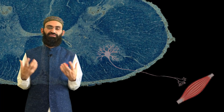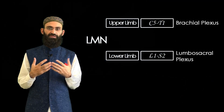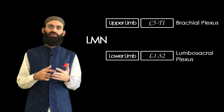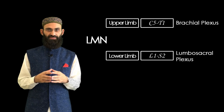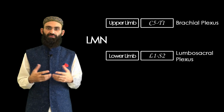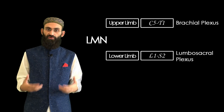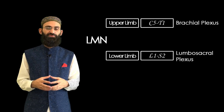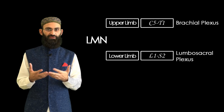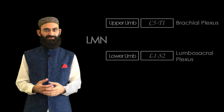The lower motor neuron supply of the upper limb comes through C5, C6, C7, C8, and T1 spinal segments via the brachial plexus, while the lower motor neuron supply of the lower limbs comes through L1, L2, L3, and L4 spinal segments via the lumbar plexus.